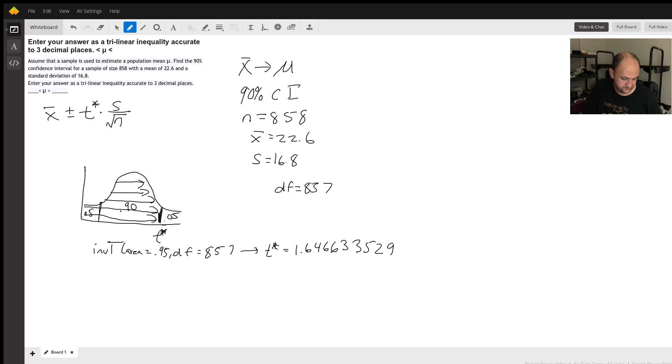Now that I have that, I can plug in all the numbers. X̄ is 22.6 plus or minus t*, which I've already stored in the calculator, times s, your sample standard deviation of 16.8, over the square root of n, your sample size of 858.